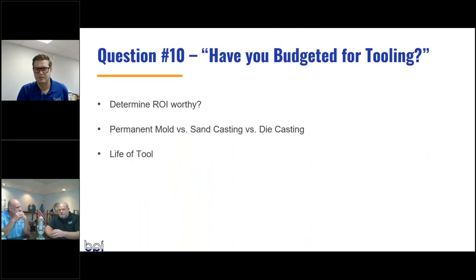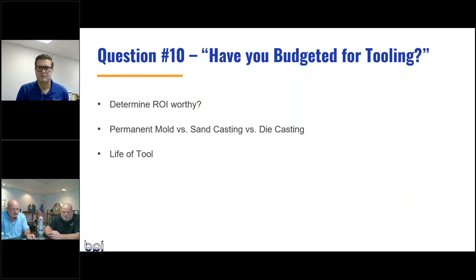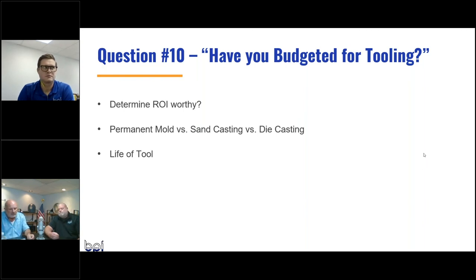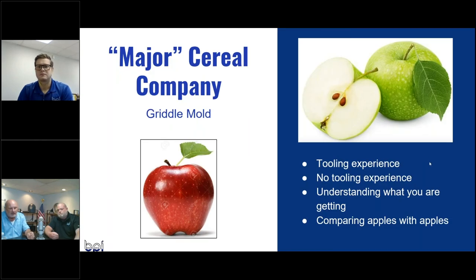Question number ten: have you budgeted for the tooling? It goes back to our earlier discussion — will you be able to pay off your tool in a timely fashion, whether that's permanent mold, sand casting, or die casting? What are your expectations for life of the tool? How long is this project going to run — a year, ten years, twenty years? Those are the types of things you need to look at, and it comes up all the time.